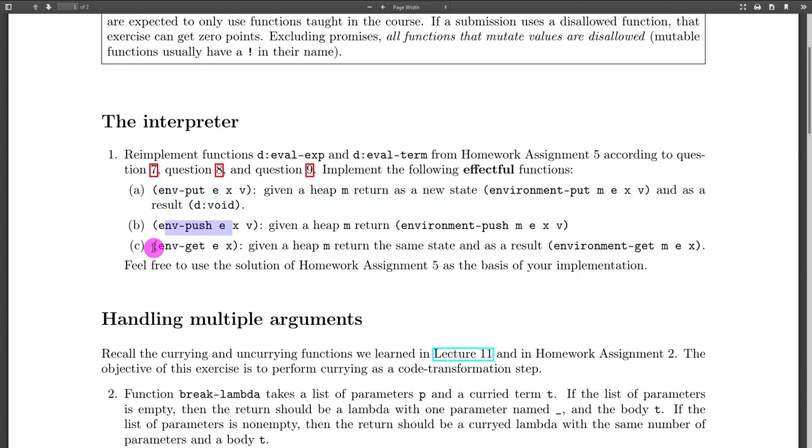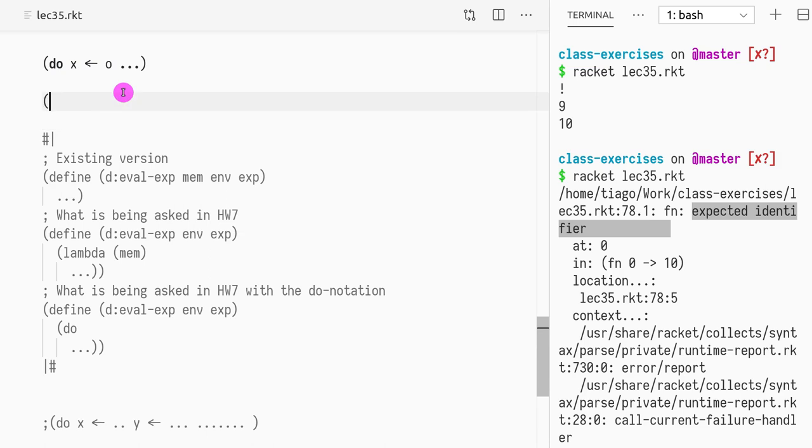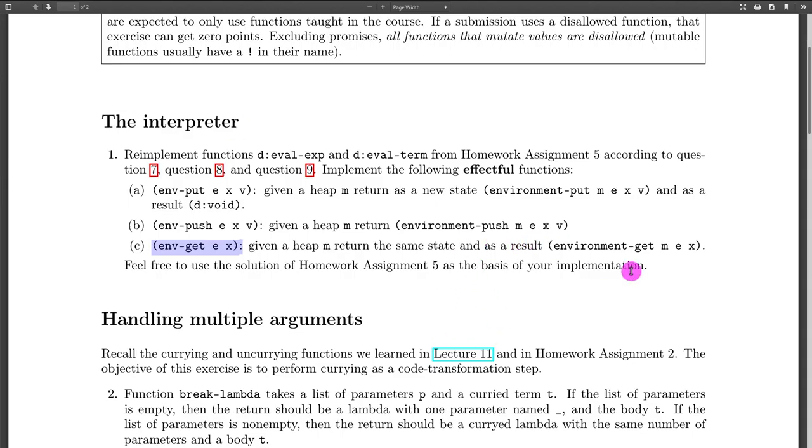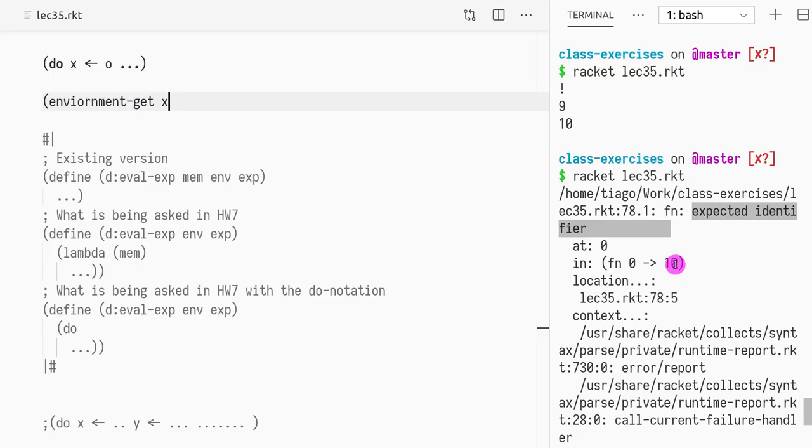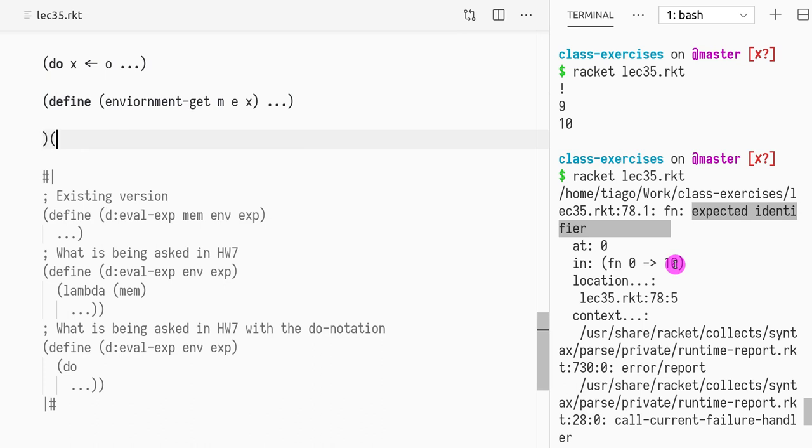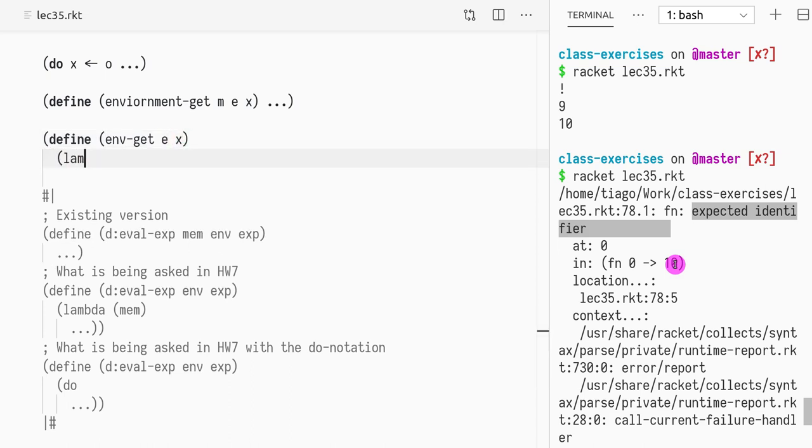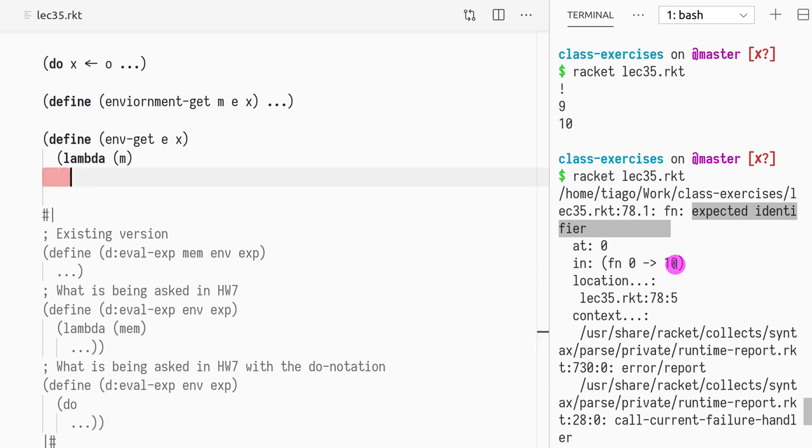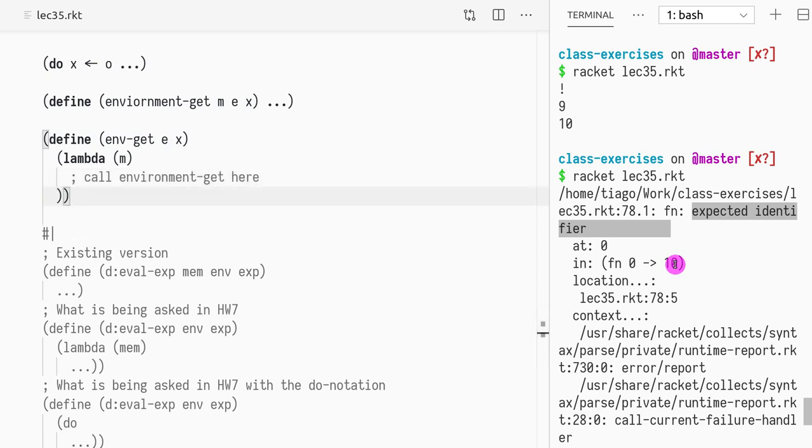So this is what we're going to do in this part. But the way I recommend you to approach the exercises, first try to implement env-put, env-push and env-get as monadic operations. So what you want to do, just to make it very clear, your environment get takes a memory and the environment and an x. Basically, this is easy points to get. And they will already get you some good motivation to start the homework.